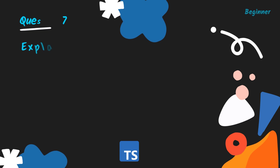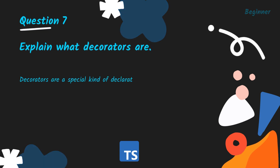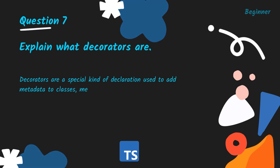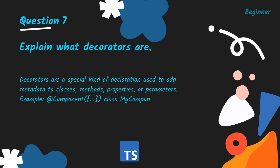Explain what decorators are. Decorators are a special kind of declaration used to add metadata to classes, methods, properties, or parameters. Example: a component decorator on a class called MyComponent.